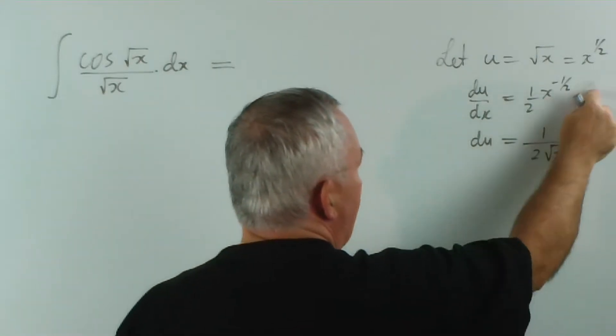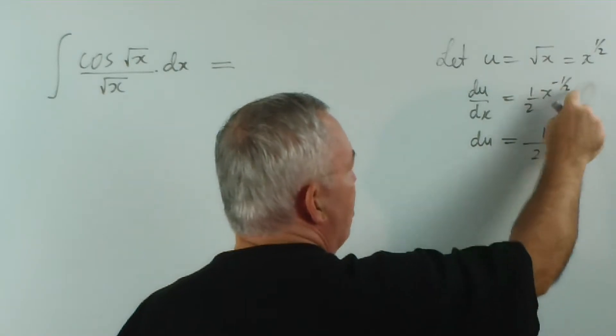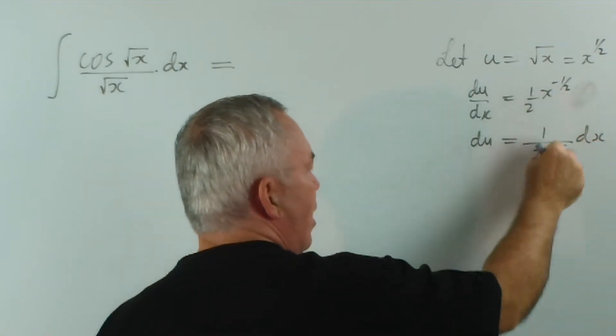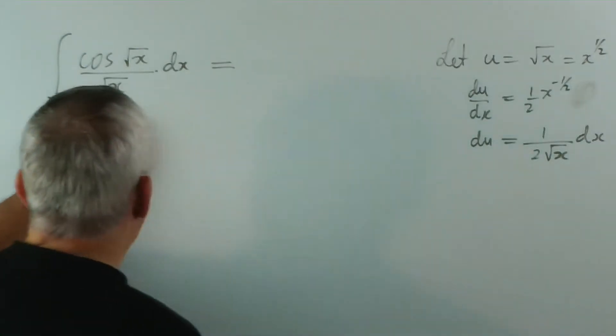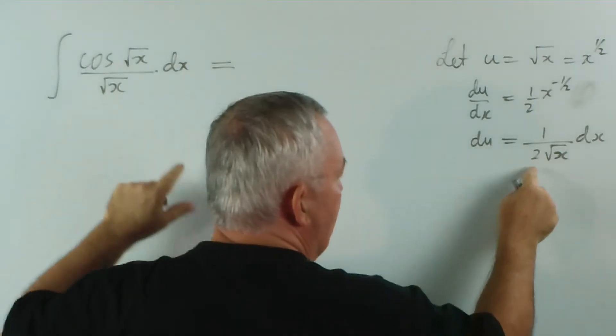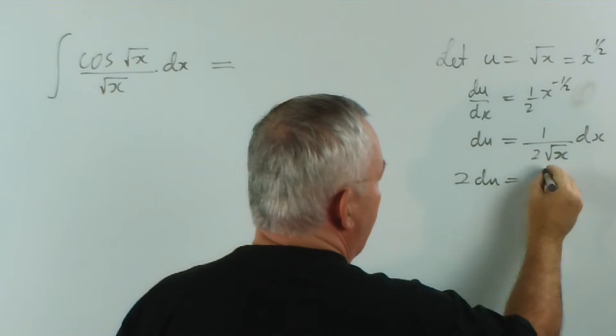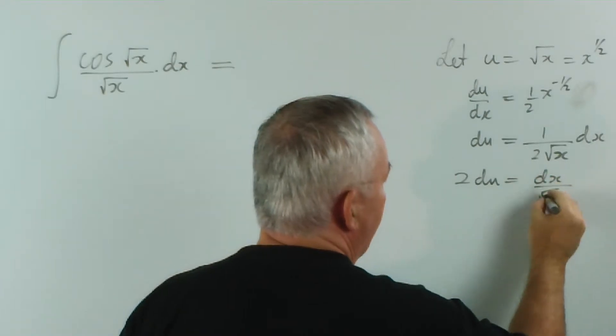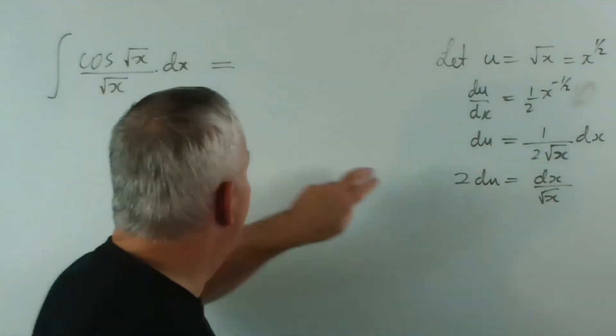So I've moved the dx up here, into this position. And because this has a negative index, I've put it on the bottom. Because it's a power of a half, I've made it a square root. And I compare it with this. I've got a dx over root x, no 2. So I multiply both sides by 2, and now we're ready to perform our substitution.